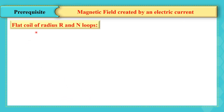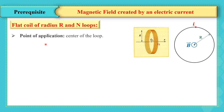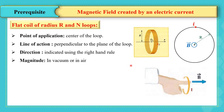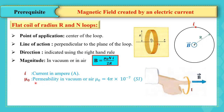In the case of a flat coil of radius R and N loops, the magnetic field created at the center has a line of action perpendicular to the plane of the loop. Its direction is indicated using the right-hand rule: the thumb indicates the direction of B while the curved fingers take the direction of the current. The magnitude in vacuum or air is B = μ₀NI / (2R), where I is the current in amperes, R is the radius of the coil in meters, and N is the number of loops.